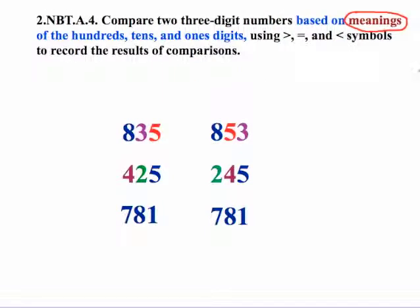Now the meat and potatoes for this standard is this whole idea that they have to make their comparisons based on meanings of the hundreds, tens, and ones digits. So without the use of additional help, students need to be able to make these comparisons just by looking at the numbers. Let's take that first one: 835 compared to 853. Can I make a decision? The hundreds place are both eights. The three and the five in the tens place, we can make a decision here. Three is less than five. So 835 is less than 853. Our next pairing: comparing the hundreds place, 400 is greater than 200. So we already know that 425 would be larger than 245. And then our last example: all of the place values are the same. 781 would be equal to 781.